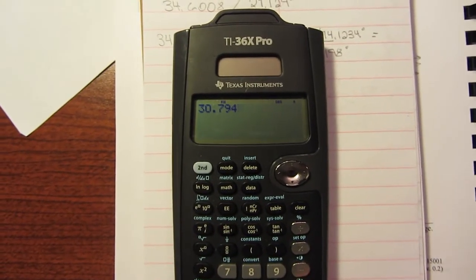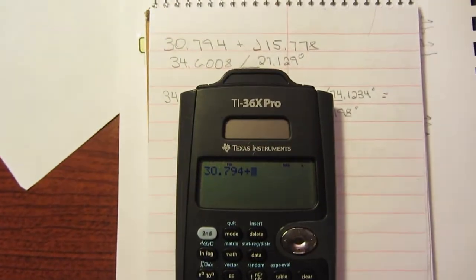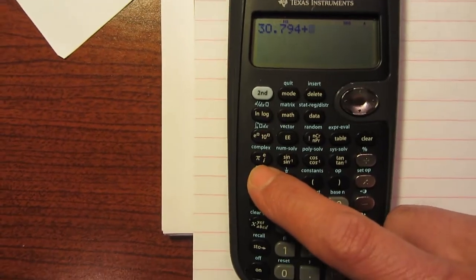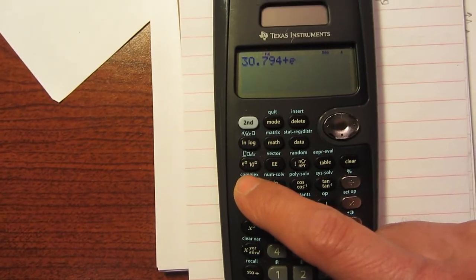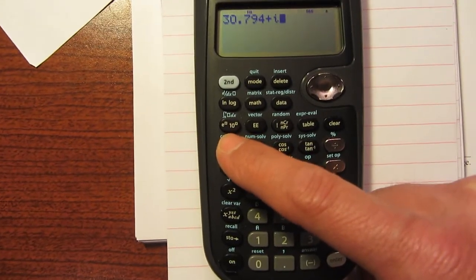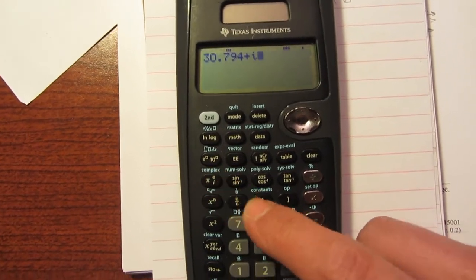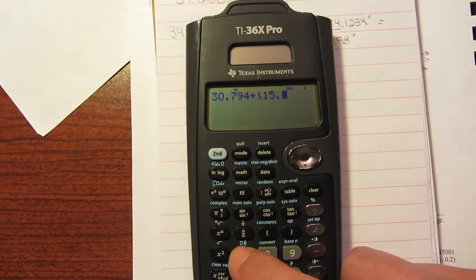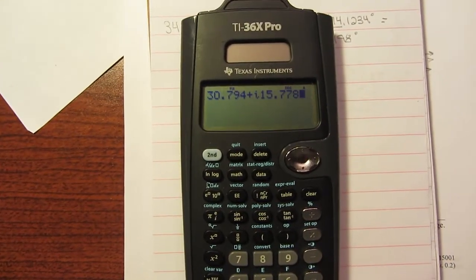I'm going to add that. I'm going to add my plus. And J. The mysterious J. Over here. Our J, if you hit that, one, two, three, it gives us an I. So on here, I is J. And then we put in 15.779.